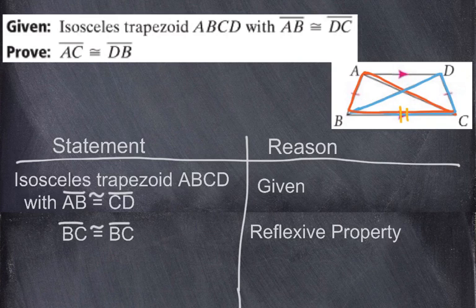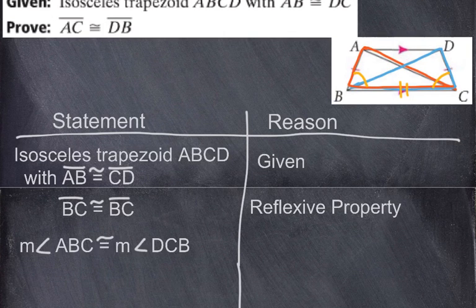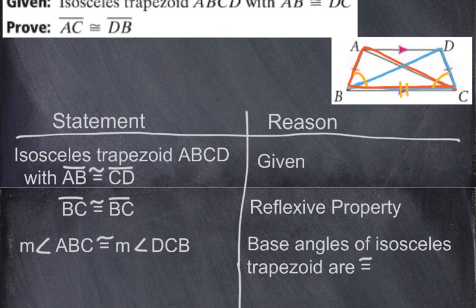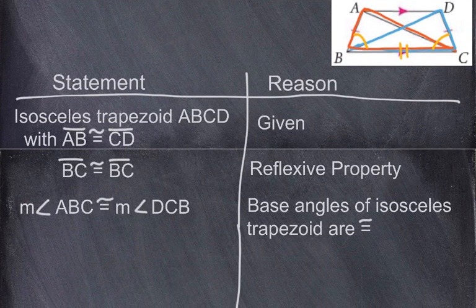To prove triangles congruent, we need three pieces of information. Since this is an isosceles trapezoid, the two base angles are congruent to each other. So the measure of angle ABC is congruent to the measure of angle DCB — base angles of an isosceles trapezoid are congruent. Now we have three bits of information needed to prove those two triangles congruent.